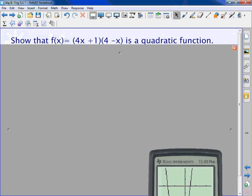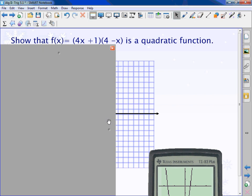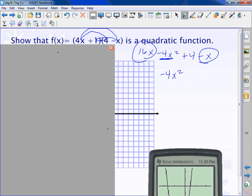To distribute this, I'm going to take 4x times 4 is 16x. 4x times -x is -4x². Then I'm going to take 1 times 4 is 4 and 1 times -x is -x. Now when I'm working with quadratics I always want to write the x² term first. So my first term I have is -4x². Now I look at my x's. What's 16x and -x? 15x. And I'm just left with 4.